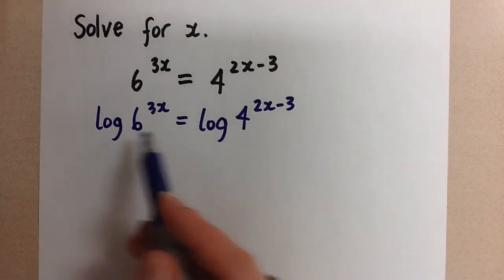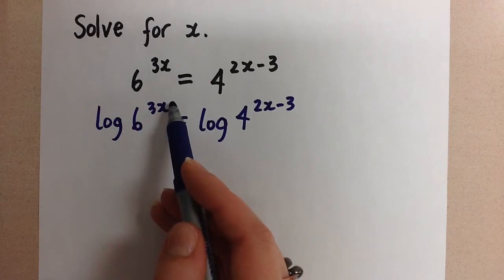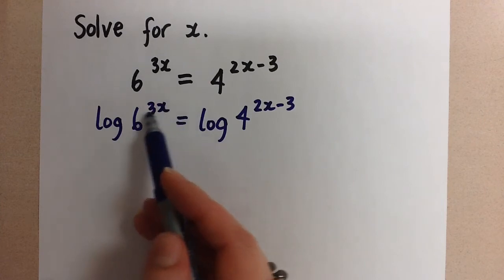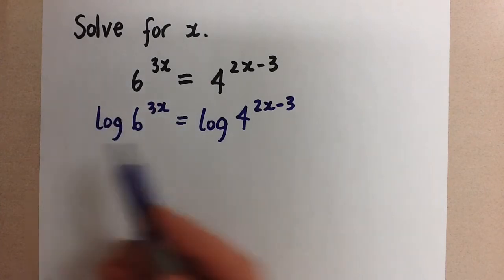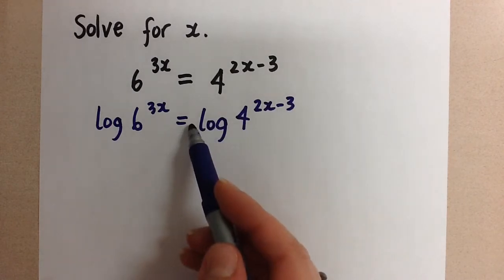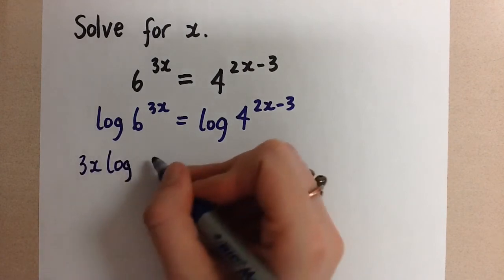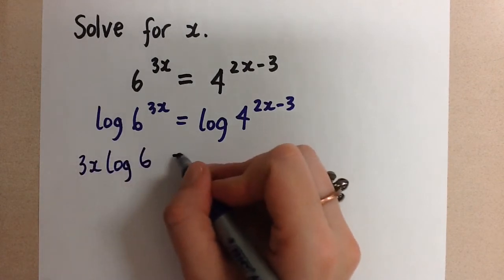And so because we've done the log here, we can remove the exponent using the power law from our laws of logarithms and bring it out to be a coefficient. And the same thing with this exponent here, it can be a coefficient here. And so this works to get rid of the exponents.